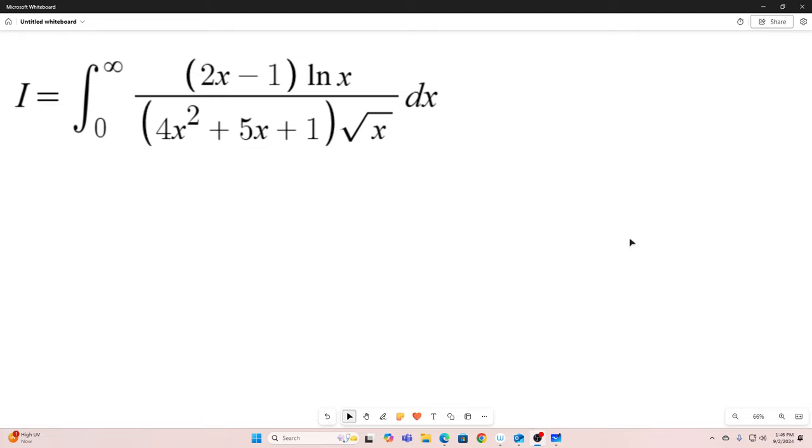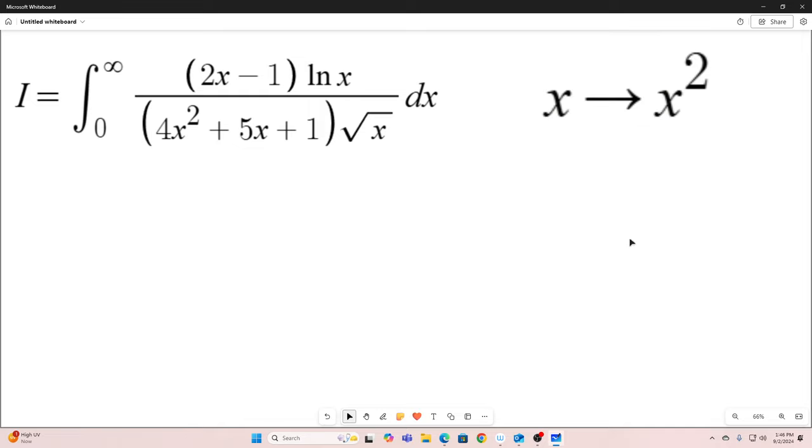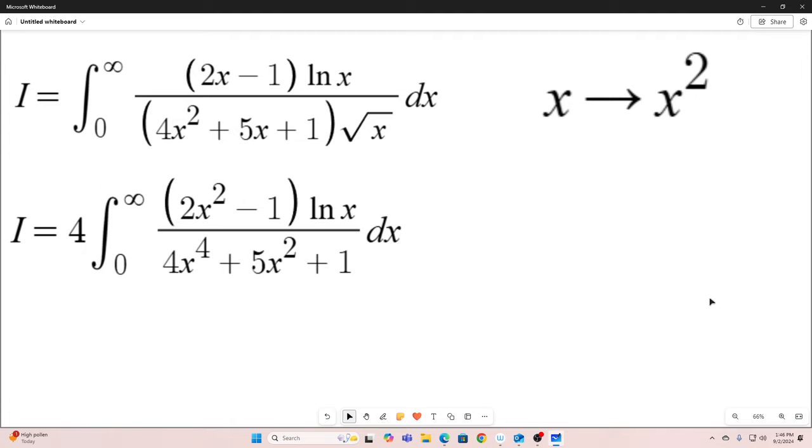So the first step I want to make is we're just going to bring x to x squared. Now you can make the substitution that u is equal to square root of x if you want, or x is equal to u squared. I'm just going to say we're bringing x to x squared, and this is the resulting integral. So these two things are equivalent.